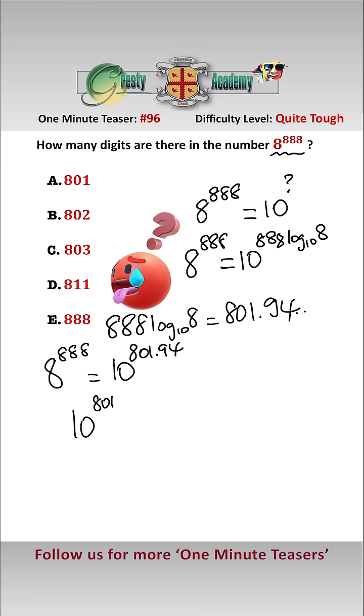10 to the power of 801 is less than 10 to the power of 801.94, which is less than 10 to the power of 802. And we know that 10 to the power of 801 has 802 digits.